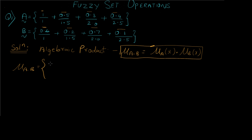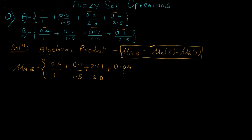Calculating the algebraic product: 1 × 0.4 = 0.4, then 0.5 × 0.2 = 0.1, then 0.3 × 0.7 = 0.21, and 0.4 × 0.1 = 0.04. The base (denominator) values remain the same. This is our final answer for algebraic product.